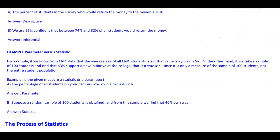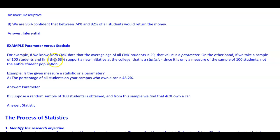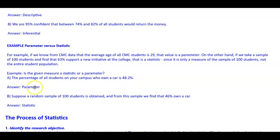The difference between parameter versus statistic: if we know from CMC data that the average age of all CMC students is 29, that value is a parameter. On the other hand, if we take a sample of 100 students and find that 63% support a new initiative, that is a statistic since it is only a measure of the sample, not the entire student population. Similarly, if 48.2% of all students on a campus own a car, that is a parameter; if a random sample of 100 students shows 46% own a car, that is a statistic.